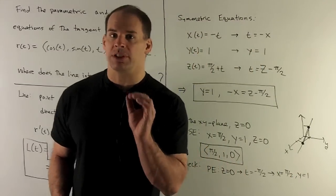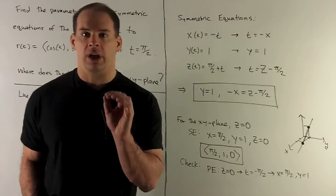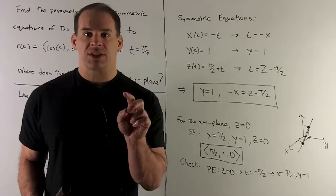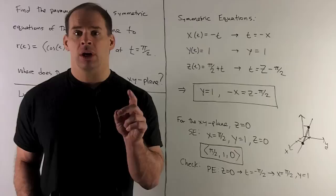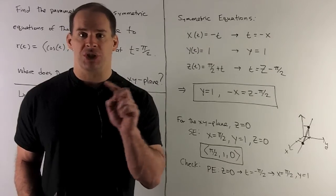Now, if I want to go to symmetric equations, what are we going to do? We're going to take the x, y, and z, solve for t, and then set whatever t is equal to to each other.